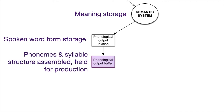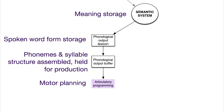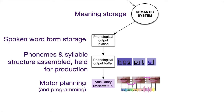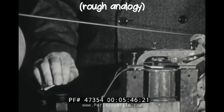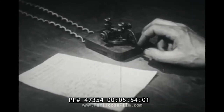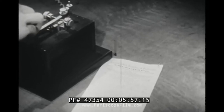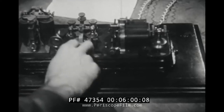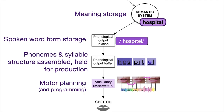The phonological output buffer is where phonemes and syllable structure are assembled and then held for production. Then it needs to be programmed — we have this conceptual idea of the phonemes and their order, but that needs to be converted into a motor plan. Strictly speaking, this process is not really language — it's motor planning and programming, so a problem in this area causes apraxia of speech rather than aphasia. This assembled word is converted into a motor plan of where the articulators should be at any given point — like a morse code operator who takes an English message and turns it into dots and dashes — and then that is sent to the articulators and the word 'hospital' is produced.